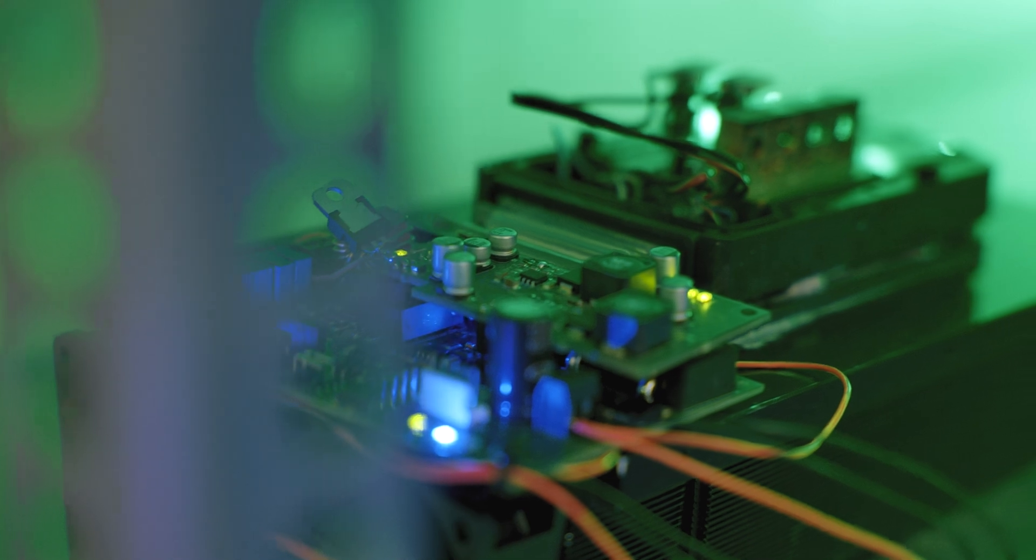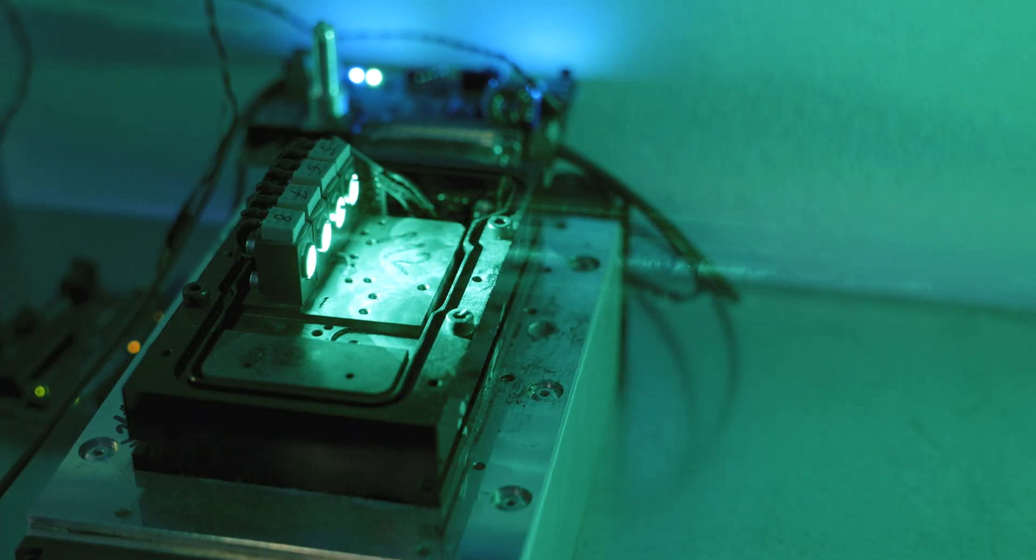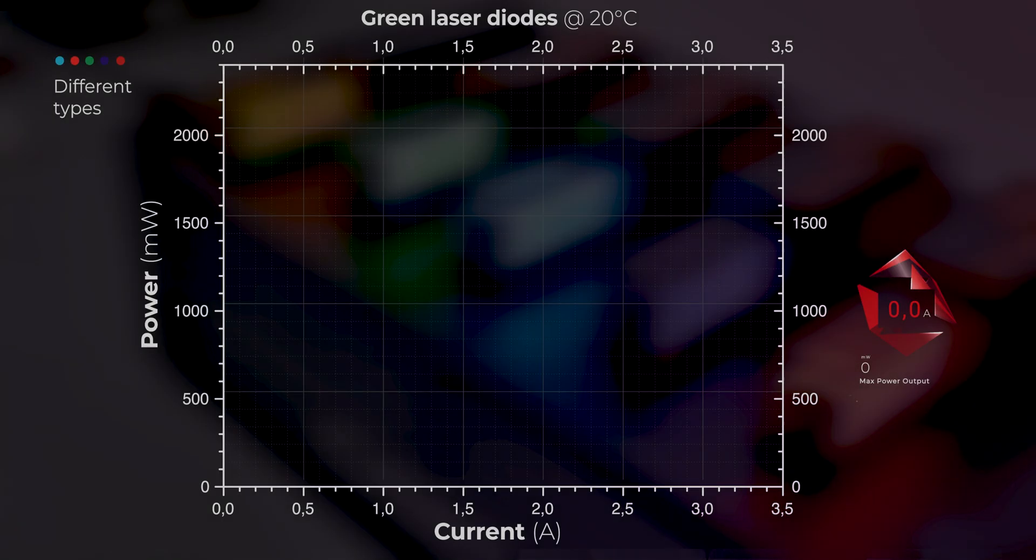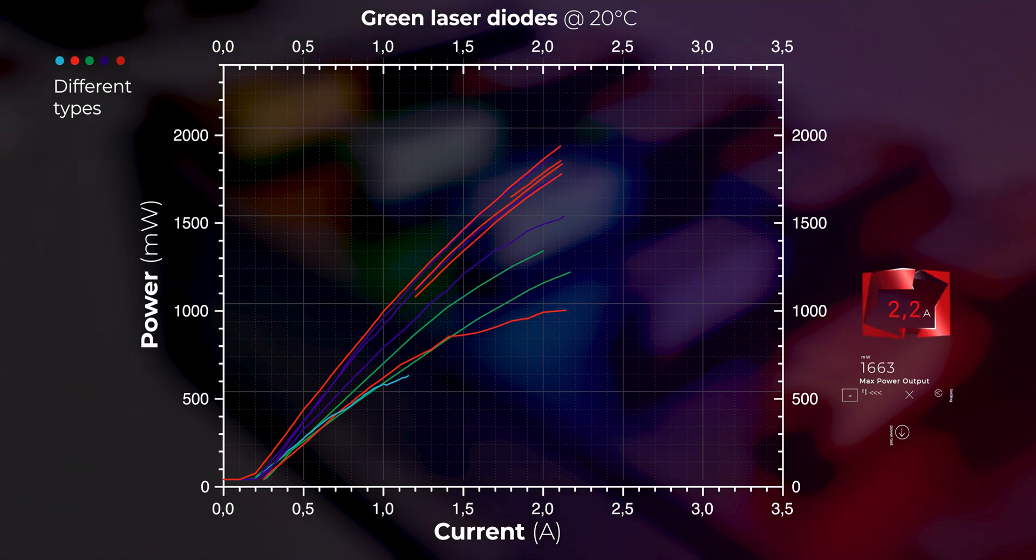All the testing happens in the laboratory environment. The diodes are tested simultaneously under different currents and their output is recorded, allowing us to establish the ideal working current, often different from what manufacturers recommend.